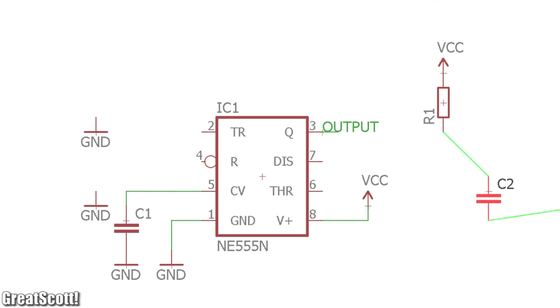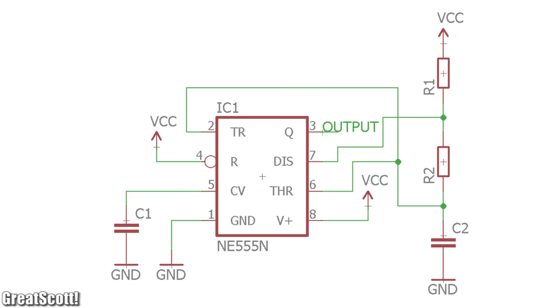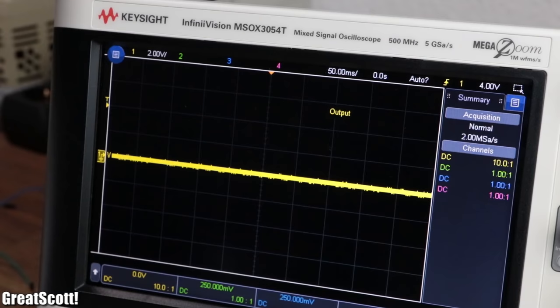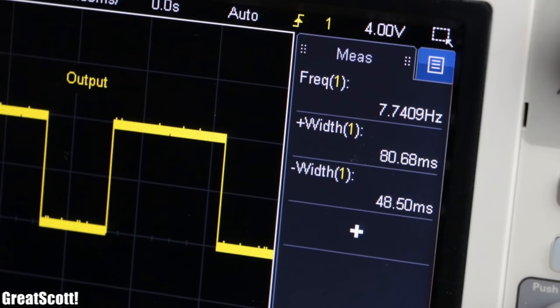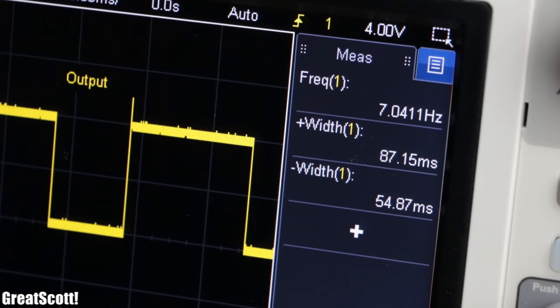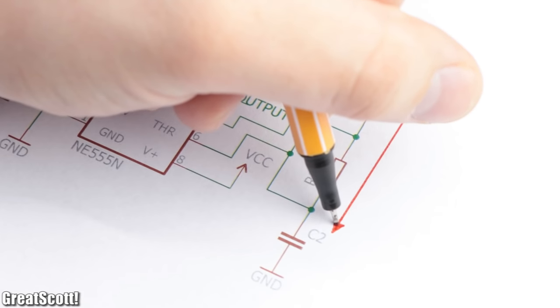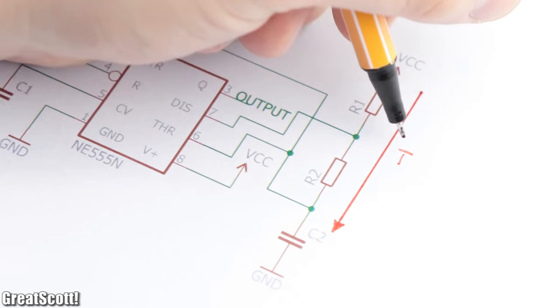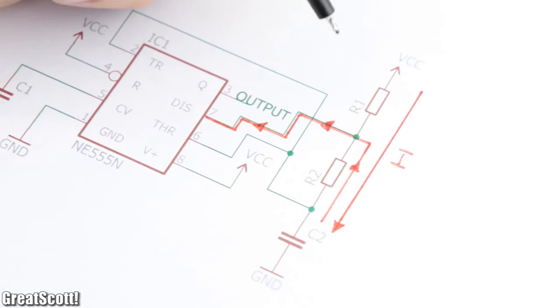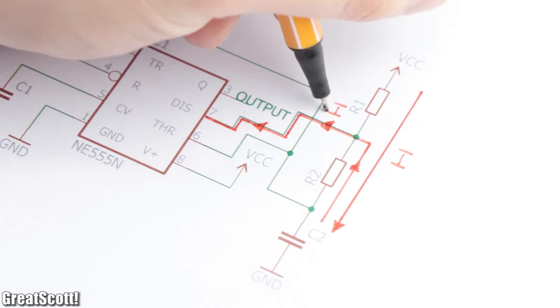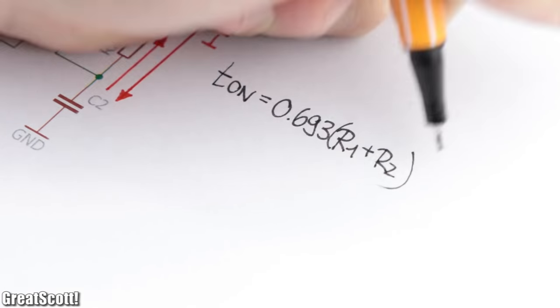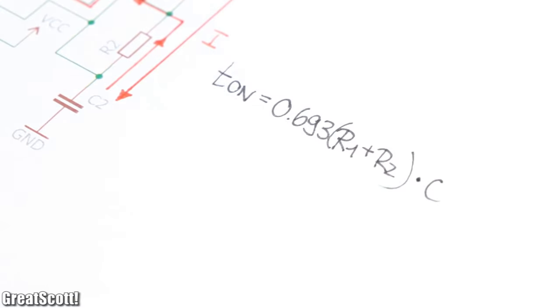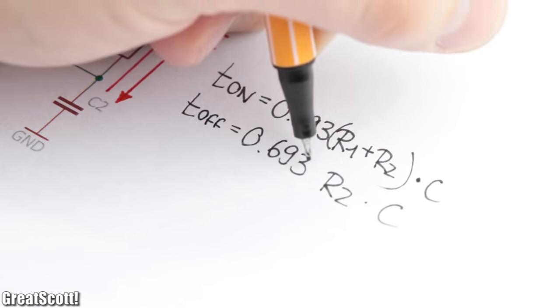The last basic configuration is the astable multivibrator, which is basically an oscillator that can create a rectangle wave with variable on and off time and even adjustable frequency. In this example the capacitor charges up through resistor 1 and 2 and discharges only through resistor 2. This way the on time of the output signal is dependent on the resistor value 1 and 2, but the off time is only determined by resistor 2.